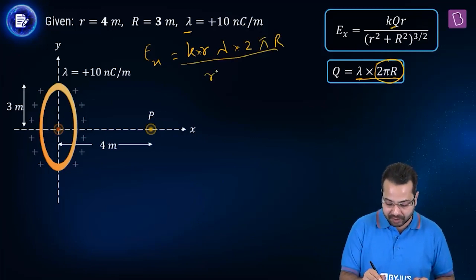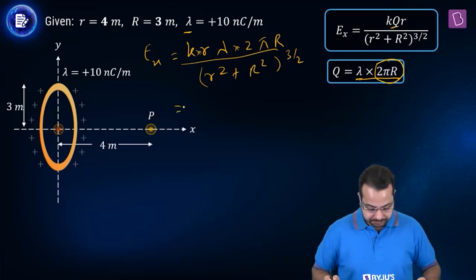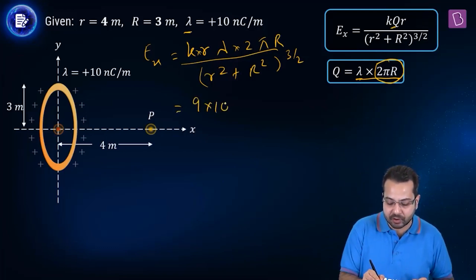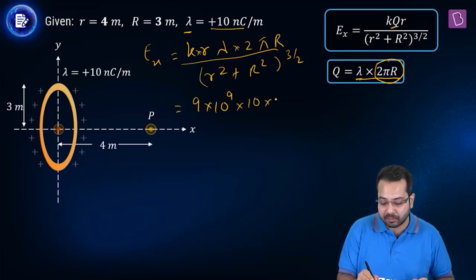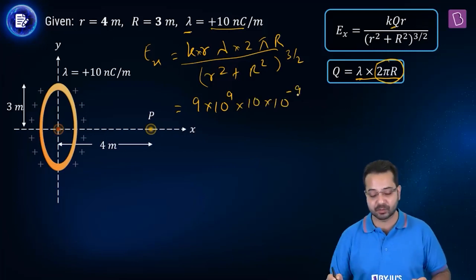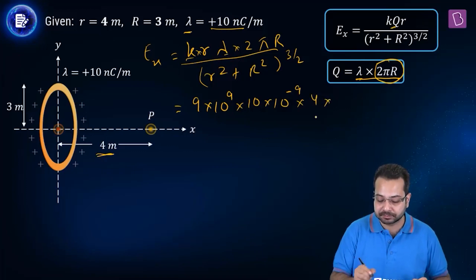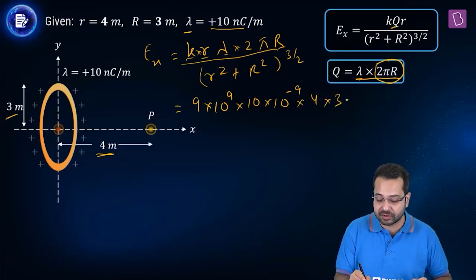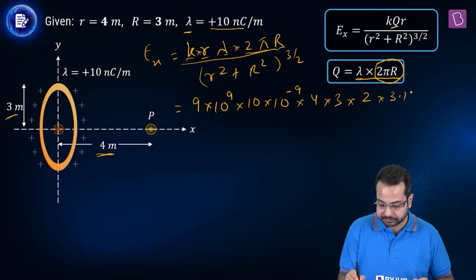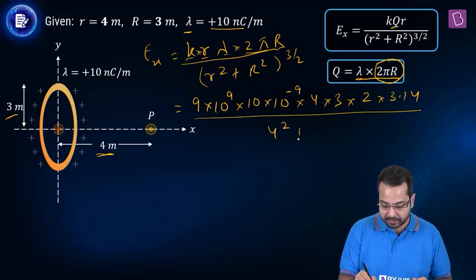Divided by (r² + R²)^(3/2). Let's start substitution. K is 9 × 10⁹. Lambda is 10 nanocoulomb per meter, so 10 × 10⁻⁹ in SI units. Small r is 4, multiplied by capital R which is 3, and multiplied by 2π. Divided by r² = 4² plus R² = 3², to the power 3/2.